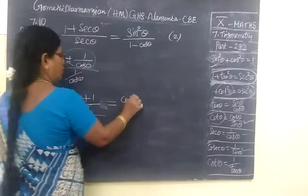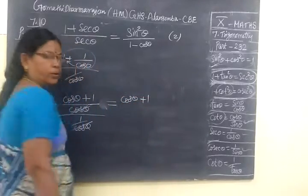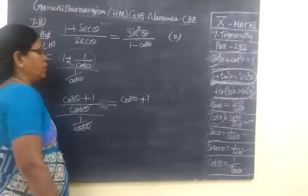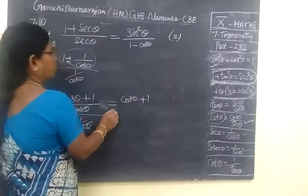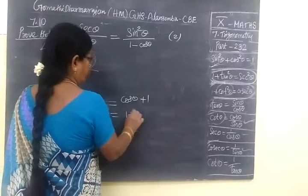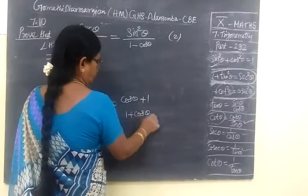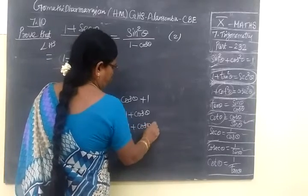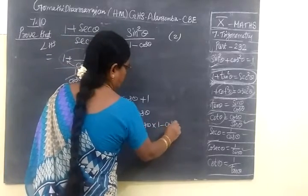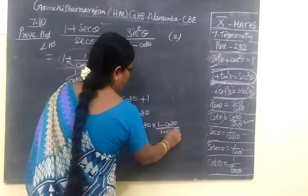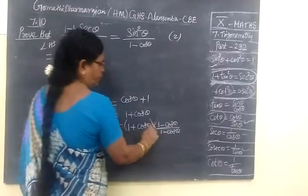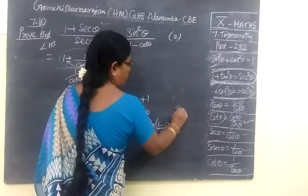So, E equal to cos theta plus 1. The sum is not yet over. You have to take the conjugate. So, conjugate, let's take the conjugate. We know that we need 1 plus cos theta, 1 minus cos theta by 1 minus cos theta. We know that a plus b into a minus b. This is the formula.